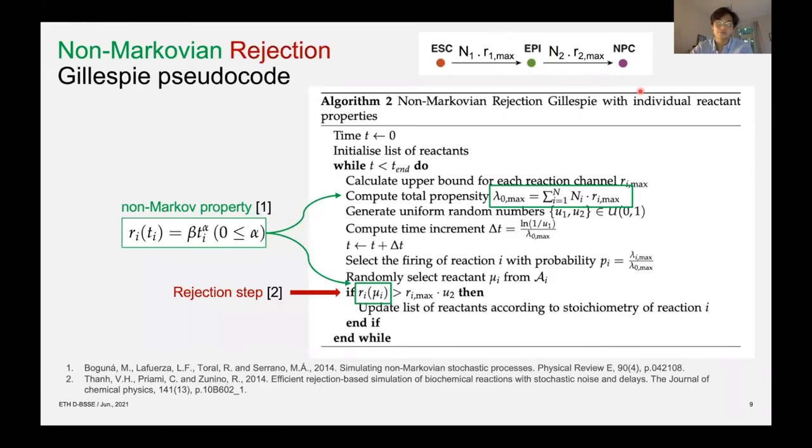Now for the non-Markovian rejection Gillespie, we are basically extending the direct Gillespie using two components. First component is the non-Markov property and then the rejection step. Both of these have been separately developed by two papers. Namely Boguna and colleagues first extended the direct Gillespie to allow for non-Markov properties, but still at a high computational cost. And then independently Tan and colleagues introduced a rejection Gillespie that improves the computational efficiency of the direct Gillespie even more. And here we've combined both approaches to have non-Markov properties but still at a high computational efficiency.